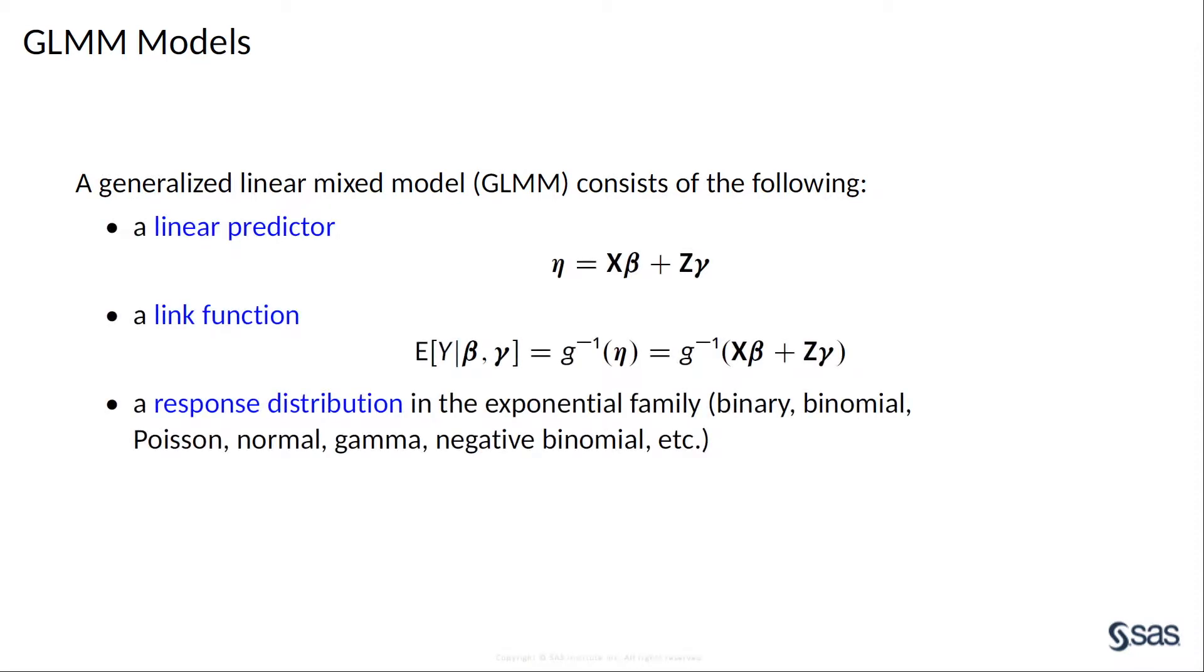A generalized linear mixed model has three components: a linear predictor including both fixed effects and random effects; a link function G that relates the linear predictor to the mean of the response; and a response distribution in the exponential family of distributions, like binomial, Poisson, gamma, and so on.